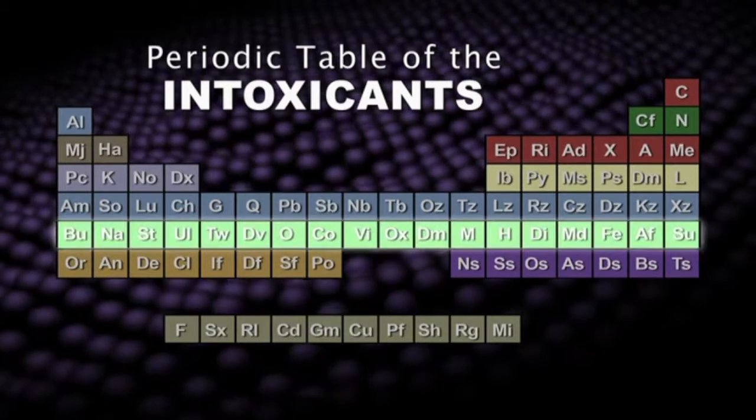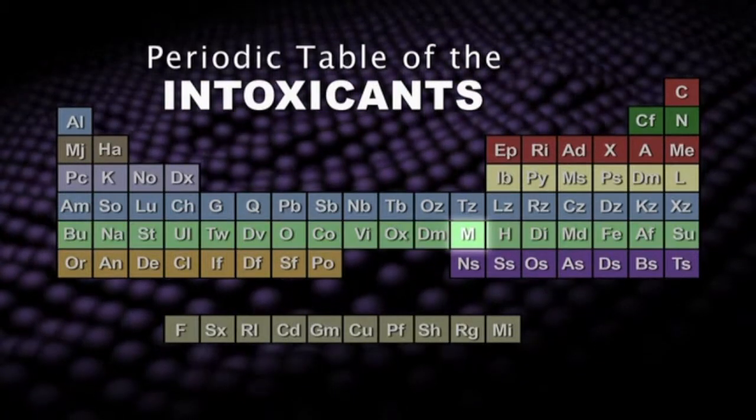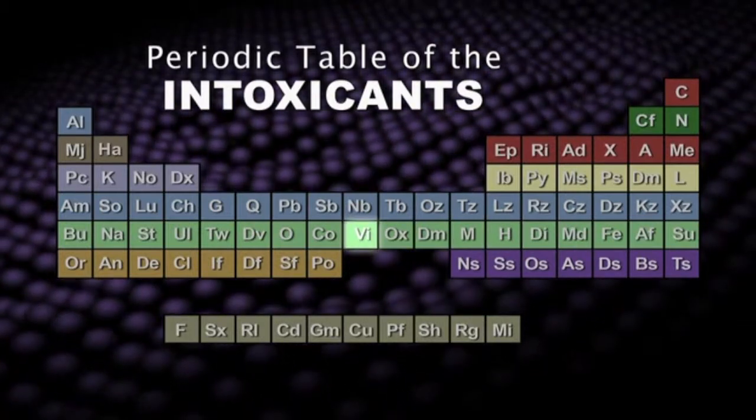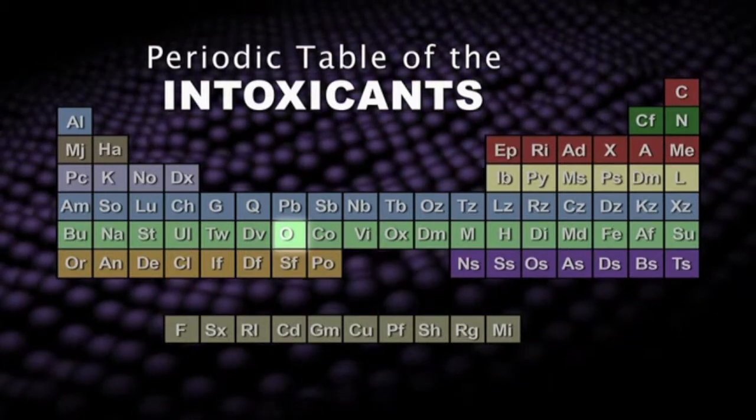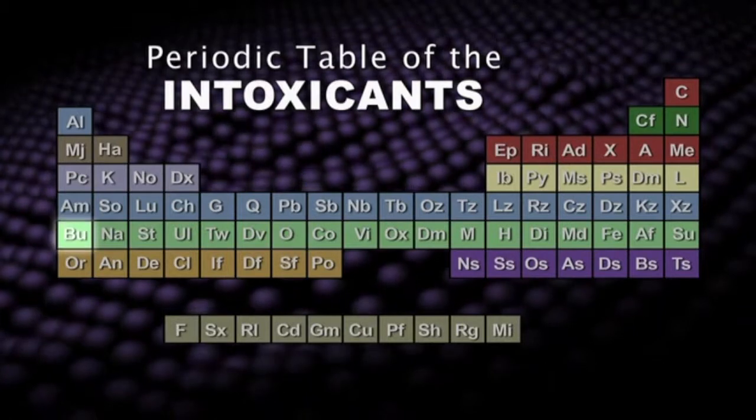Down here are the opioids. These are the classic narcotic pain relievers: morphine, heroin, methadone. Here's hydrocodone, that's the main ingredient in Vicodin, an ancient one, opium, and an important newcomer used in the treatment of opioid addiction called buprenorphine.